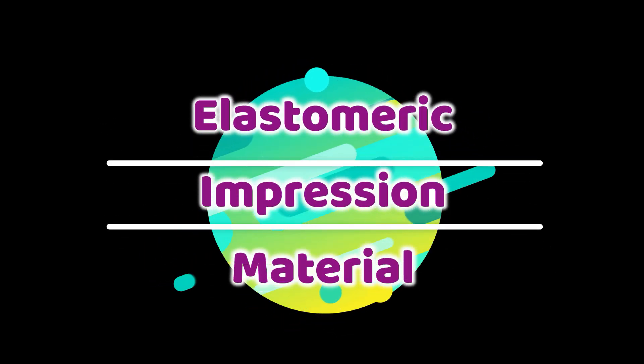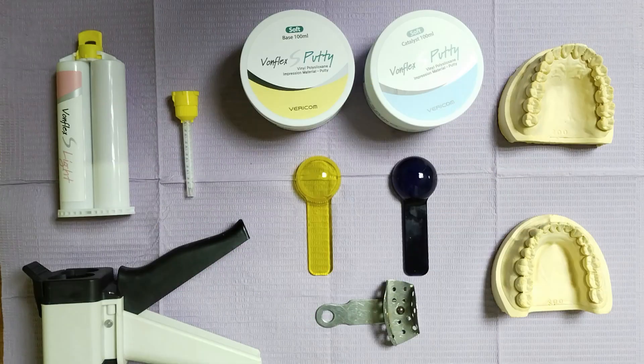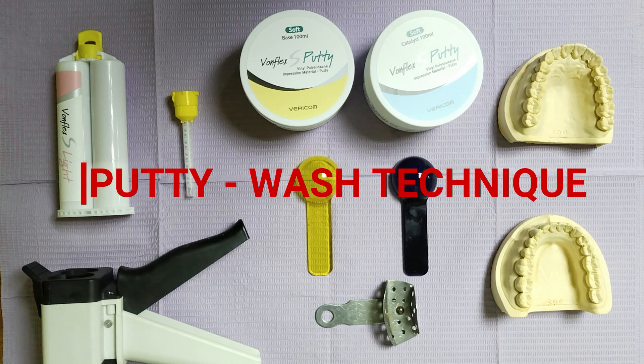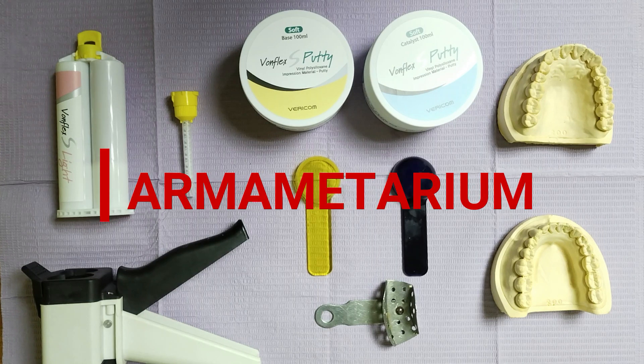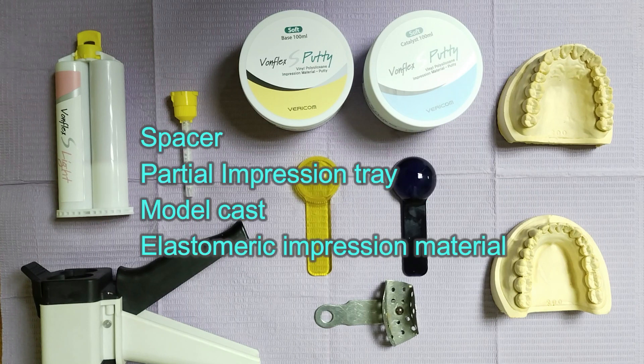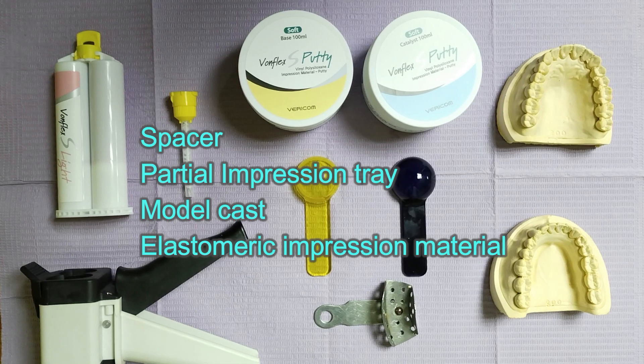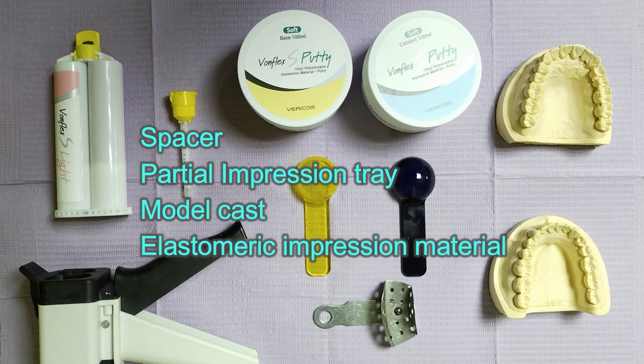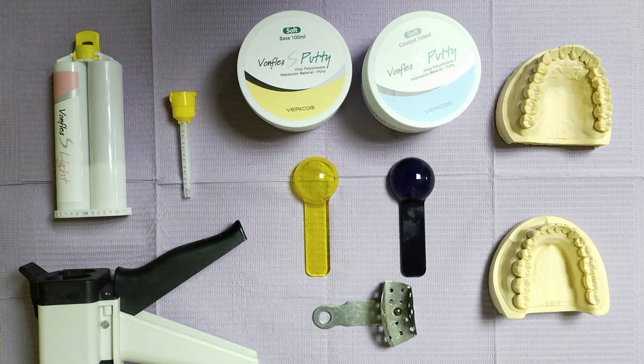Experiment 6: The study of the manipulation of elastomeric impression materials. We will use the putty and wash technique, or the two-step technique. Prepare your armamentarium, which includes your spacer (a small piece of plastic wrap), your partial impression tray, your model cast, and your elastomeric impression material, which contains your putty and light body or wash.